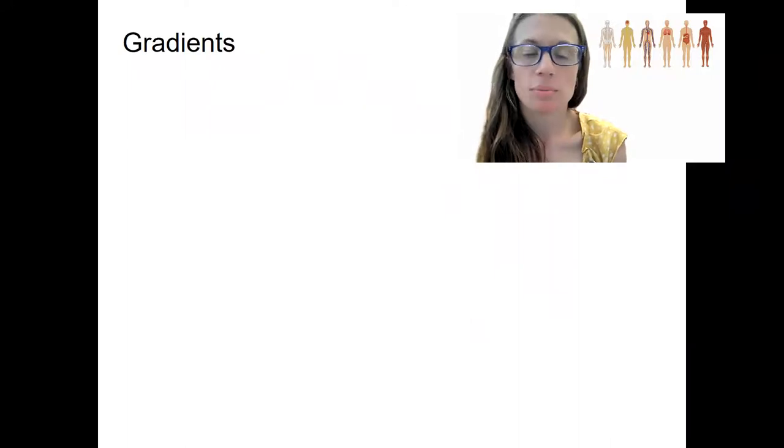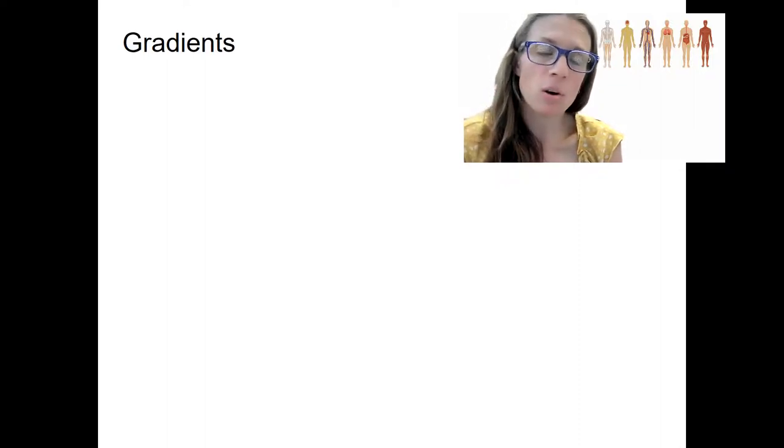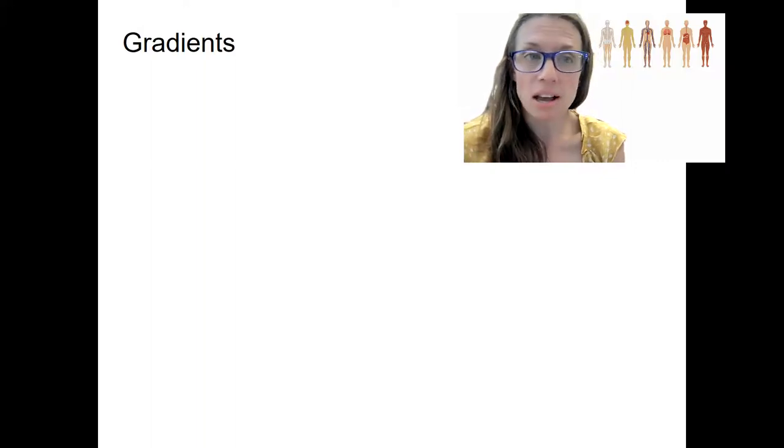So because of the different compartments we have, the organization of our body, we have the ability to have differences in either different places within our body or inside versus outside. These differences are called gradients.